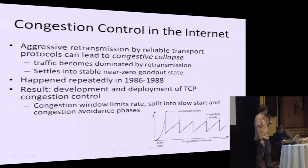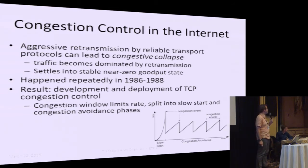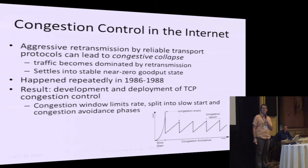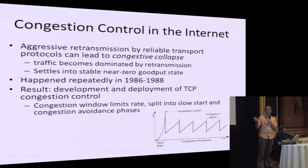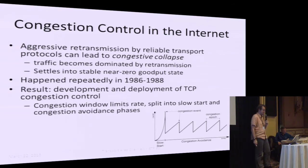Slow start is actually quite badly named, because in slow start you're increasing your sending rate exponentially. It starts with one packet, then two, then four, then eight. When I teach TCP to people, the first question I get is 'slow start looks pretty fast' — yes, it is. Congestion control initially was based just on loss signaling, and the widely deployed algorithms use loss as a congestion signal. When the congestion window detects a lost packet, it goes down, then goes back into linear probing in the congestion avoidance phase.